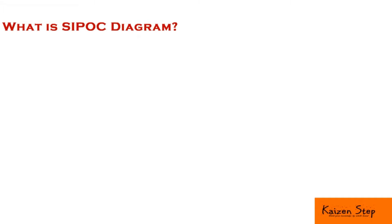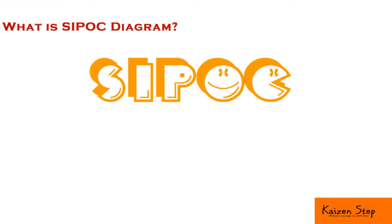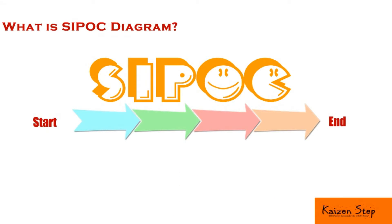What is a SIPOC Diagram? A SIPOC Diagram is a visual tool for documenting a business process from beginning to end. It simply maps the process from a macroscopic point of view. It is considered a high-level process map because it does not contain much detail.